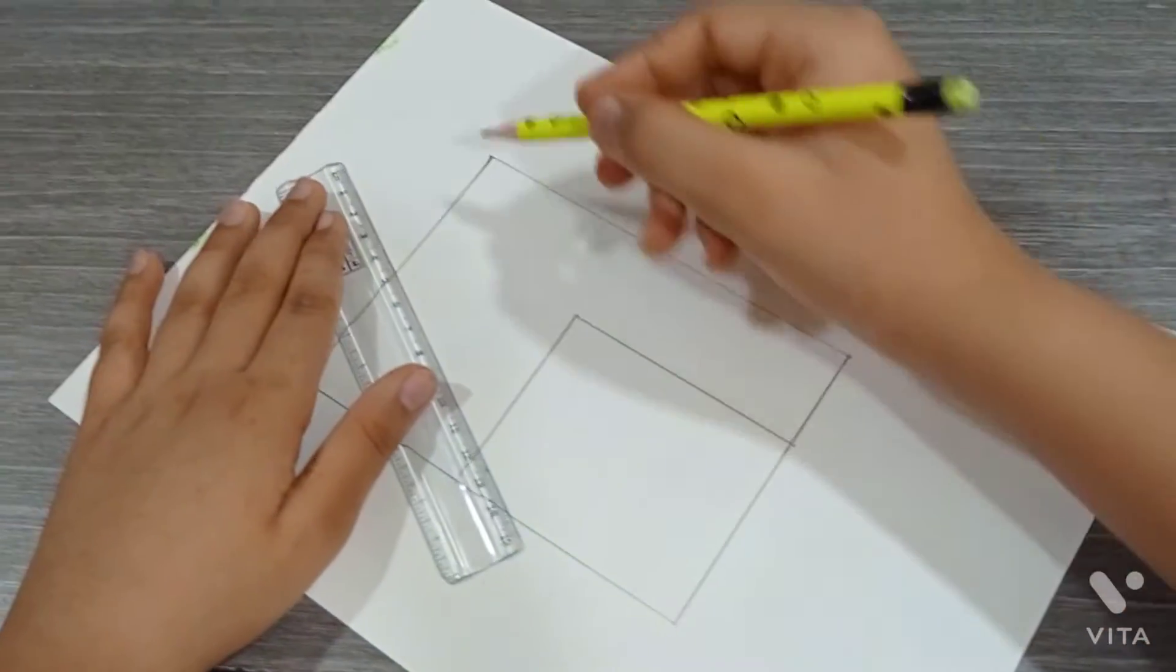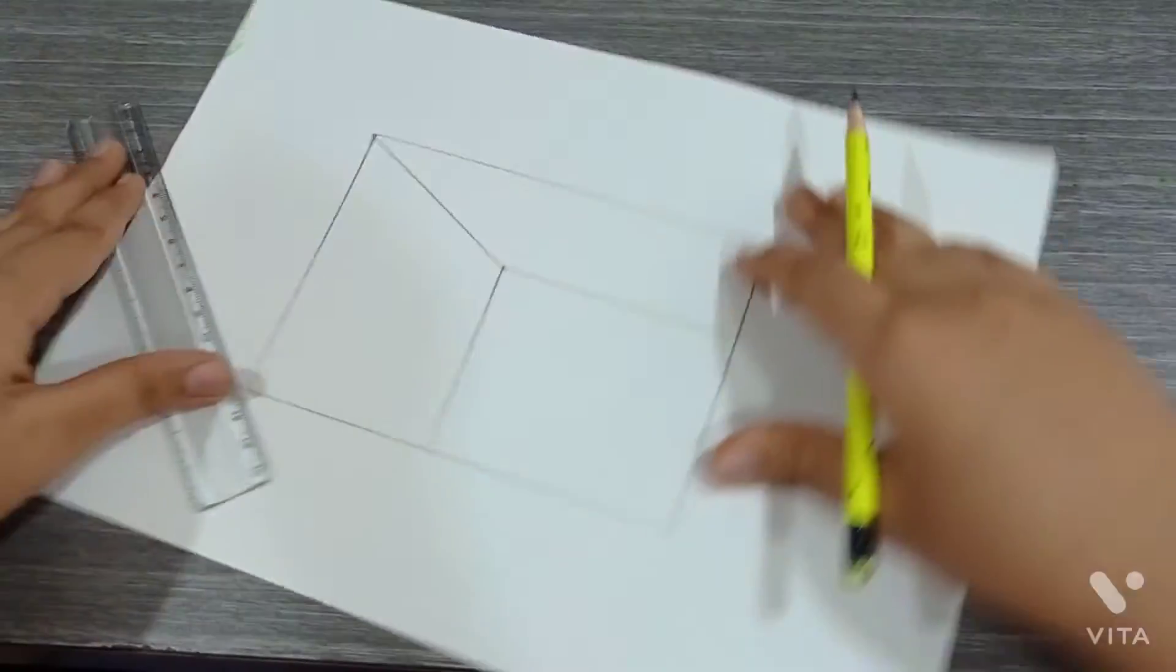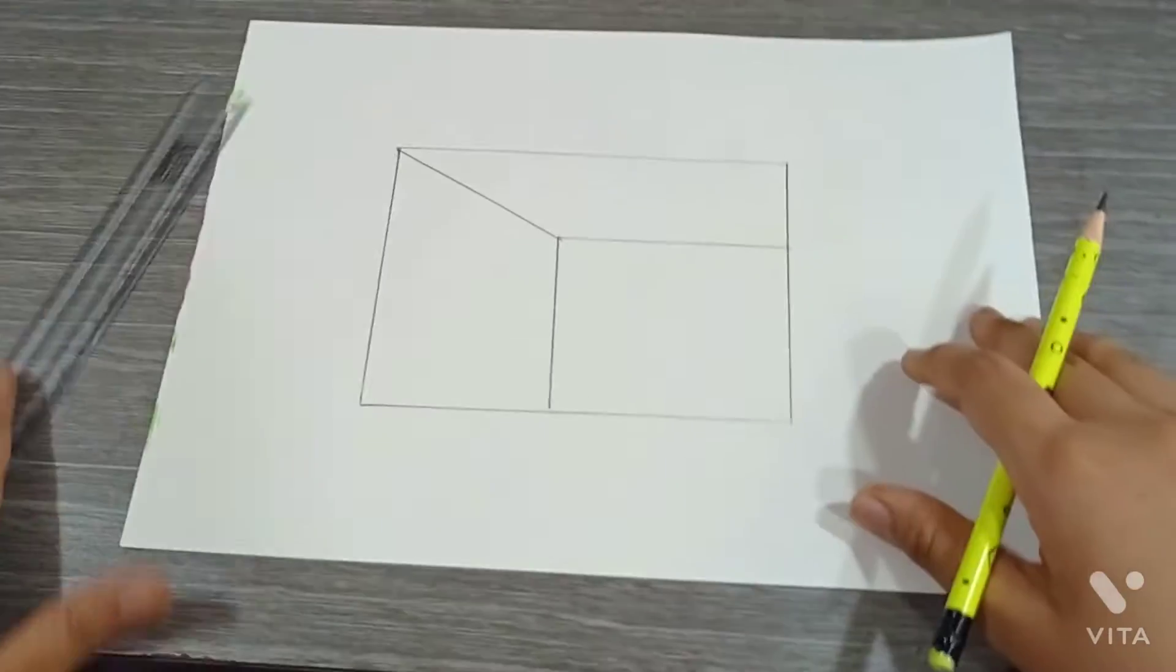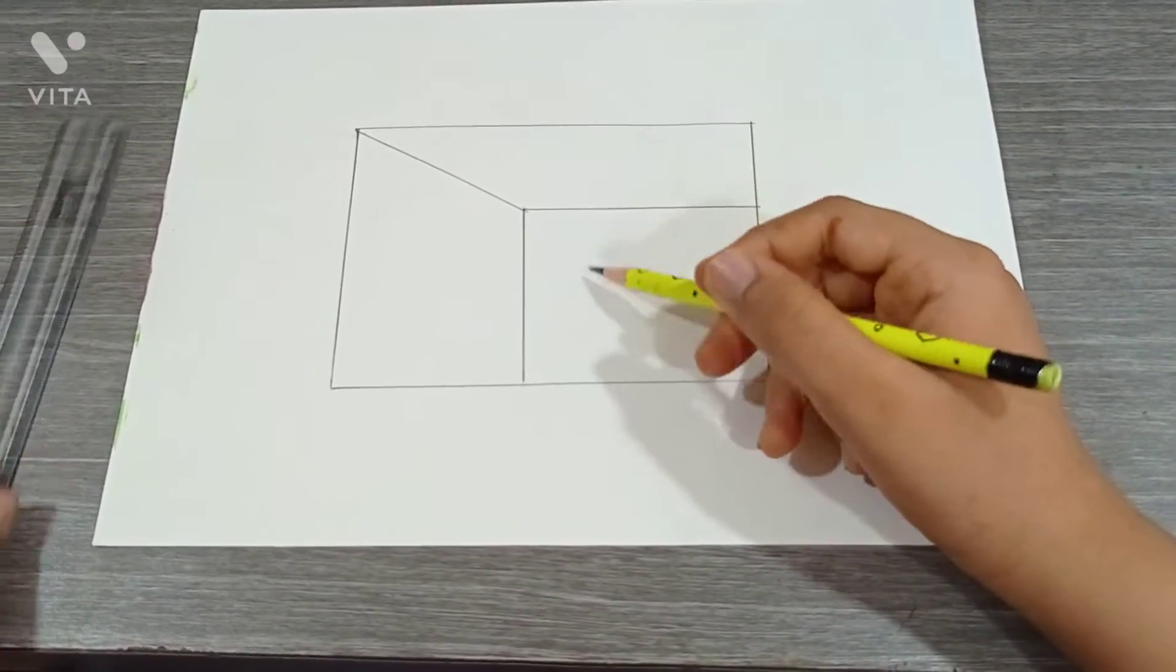Now we have to join this corner to this corner. As you can see, it's ready. Now we have to draw a small box inside this one.